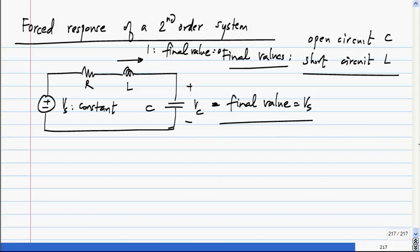Now we know that the total response is the steady state response plus natural response. Here we will get Vs plus one of the three types of the natural response.